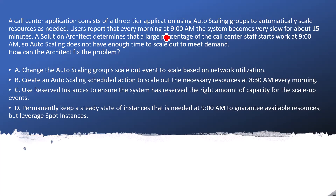Let's highlight the hints here. The key hint is the time — 9 a.m. — and the auto-scaling group. We need to manage the three-tier application in the auto-scaling group so it scales automatically. There's a correlation: at 9 a.m. we get high traffic, meaning high IOPS, as most users are accessing the application at that time.